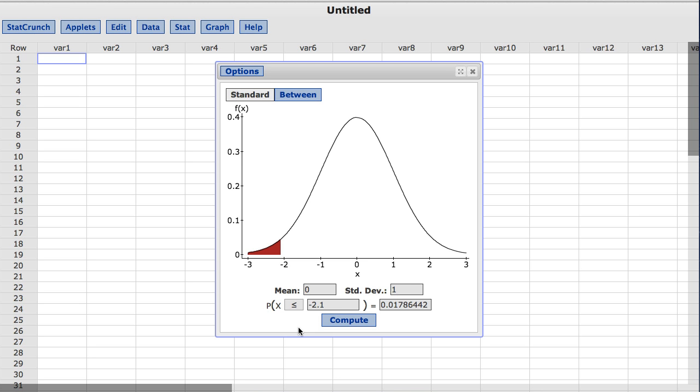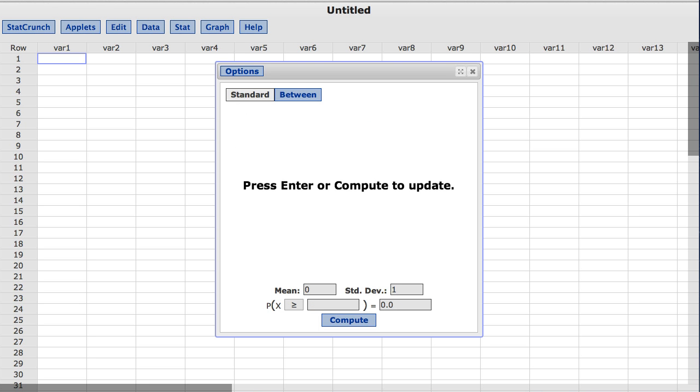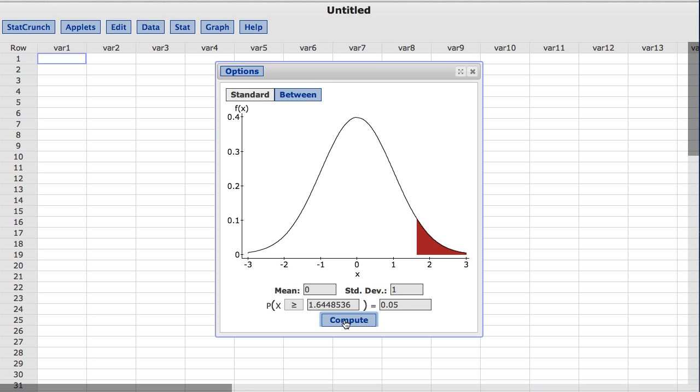I am going to switch the inequality sign to greater than or equal to. I am now going to enter 0.05 for the probability input, which is to the right of the equal sign. This input accepts values between 0 and 1. I will now click Compute. The distributional picture shown is updated with 5% of the area colored in red. The reference value is also computed to be approximately 1.64.